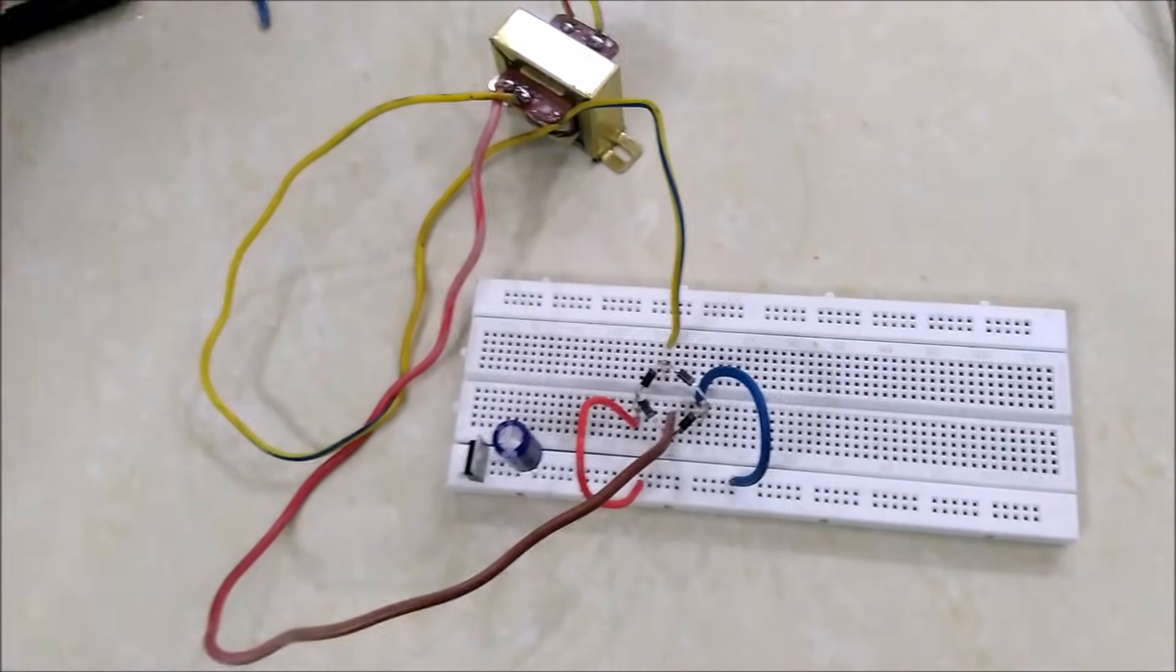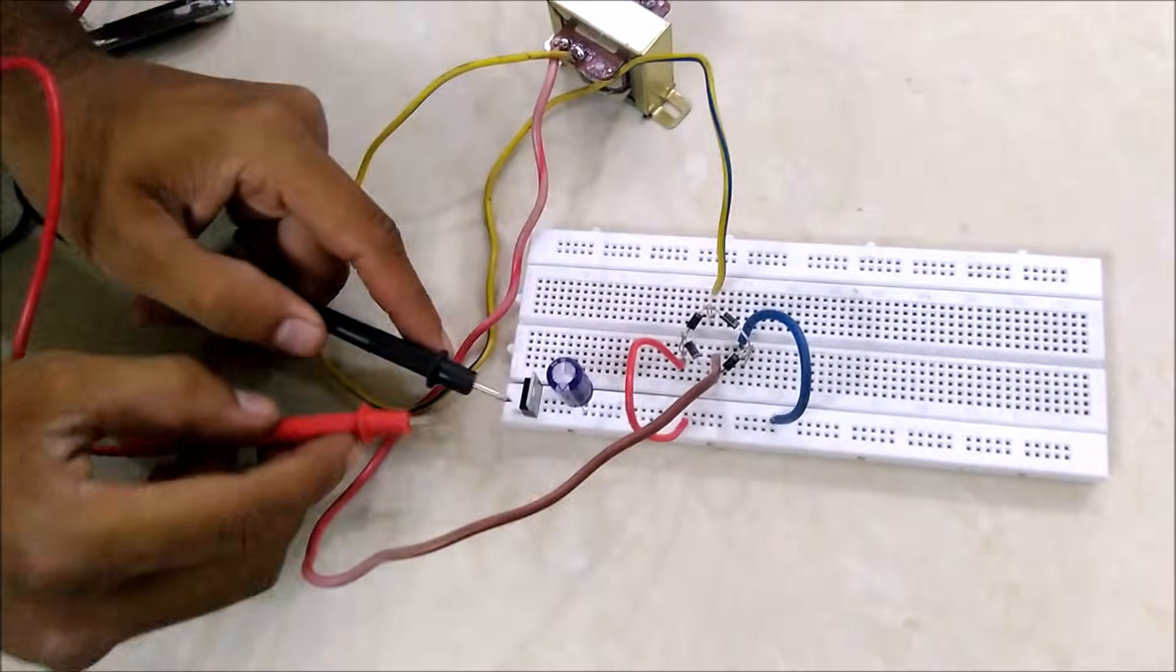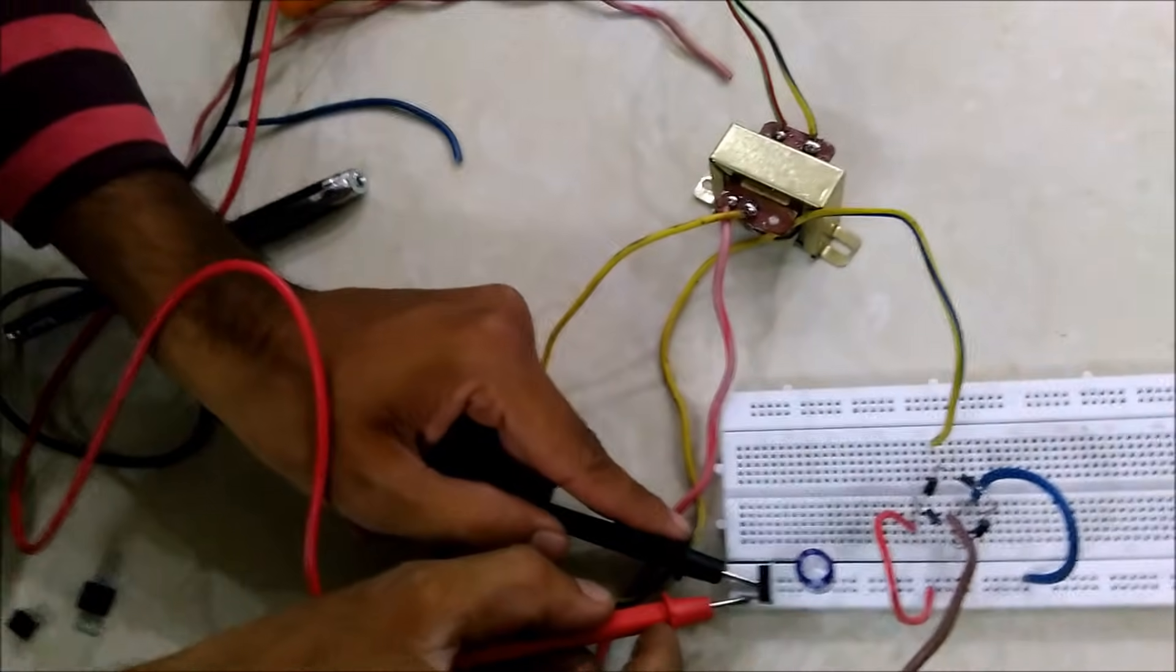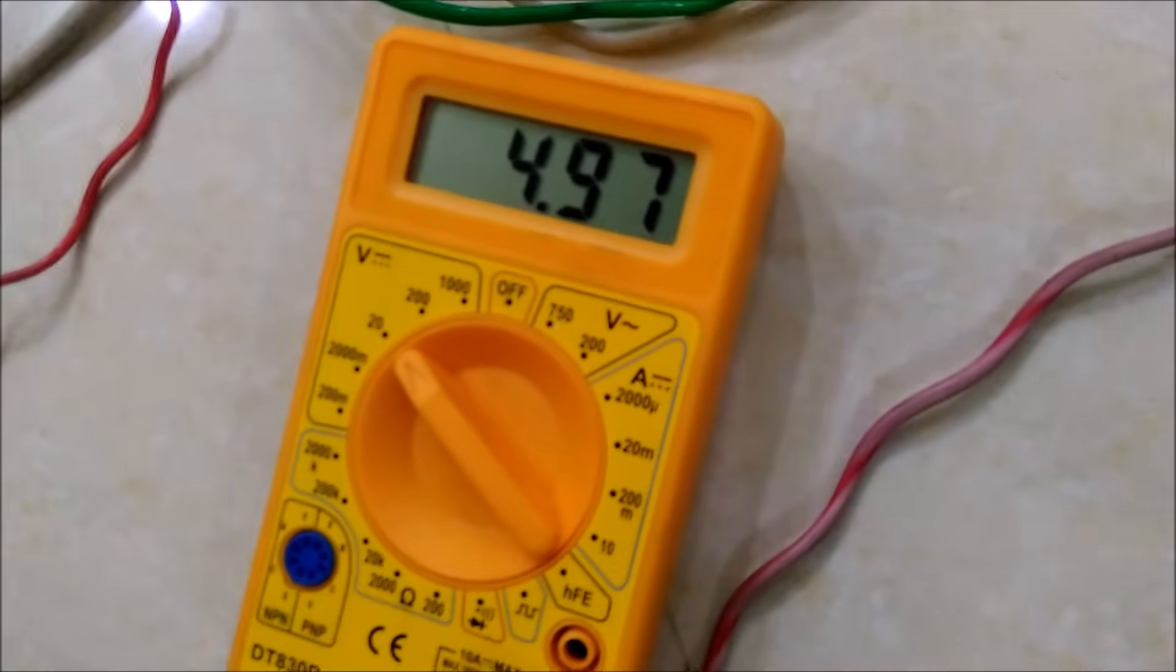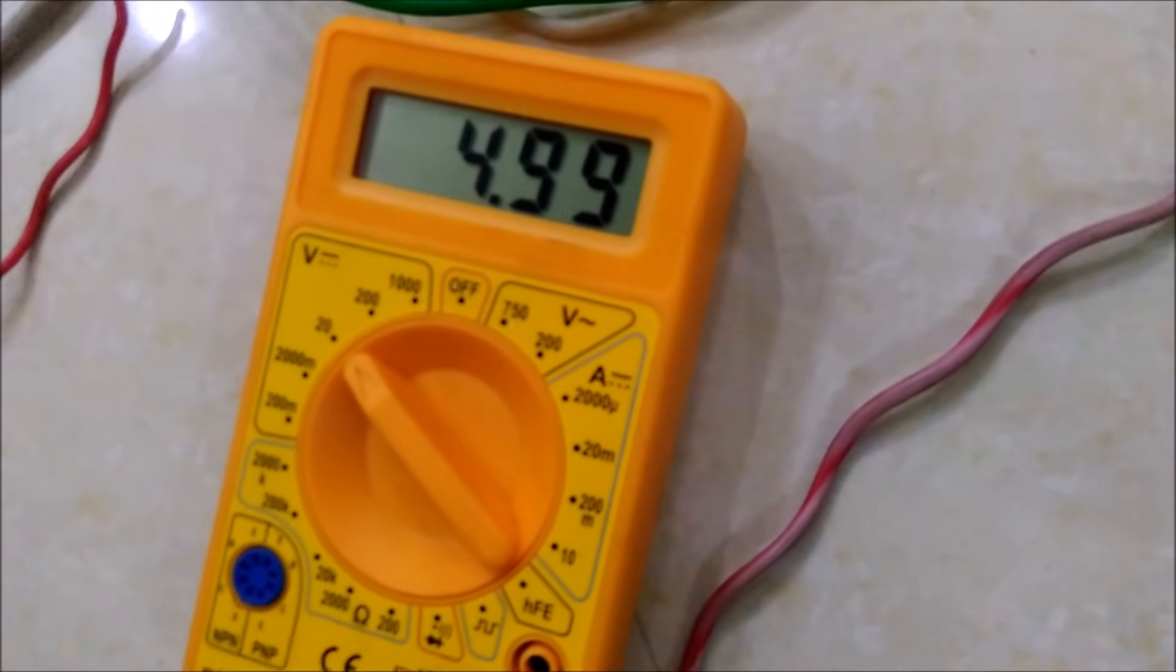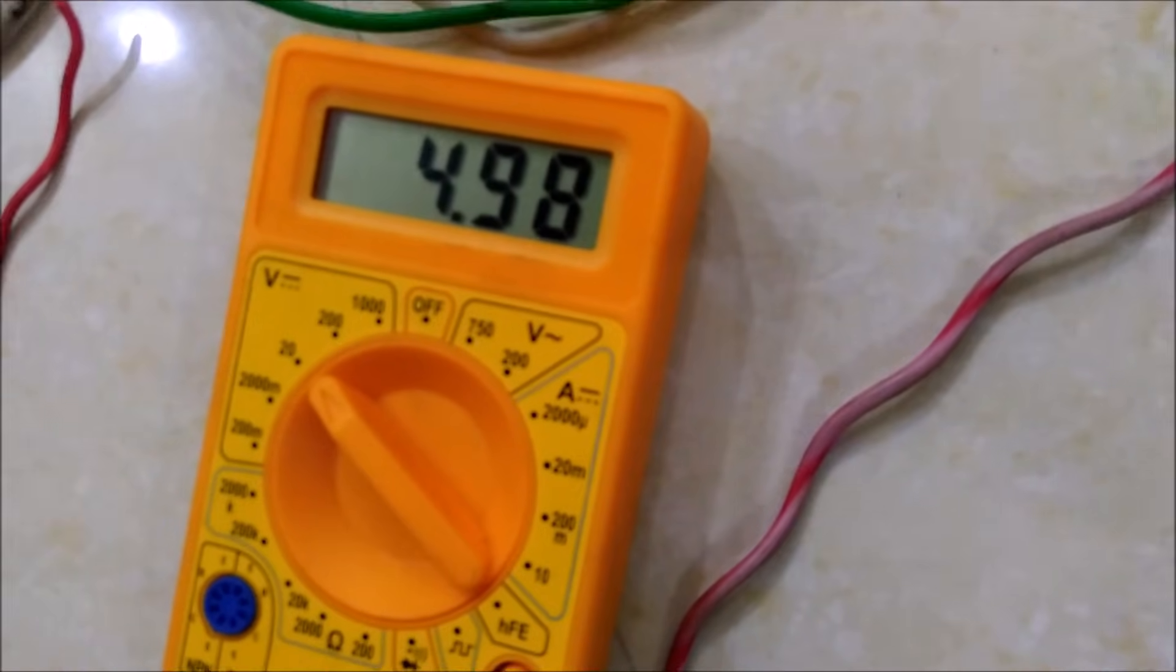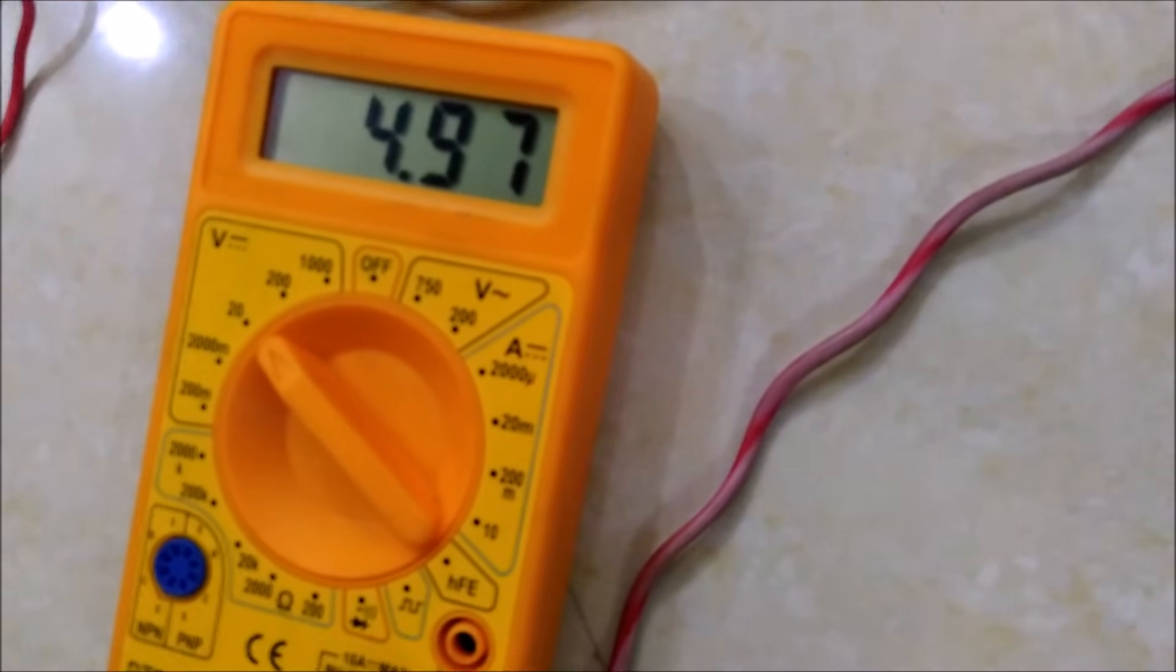We'll check the output voltage in the multimeter. This shows approximately 5 volts regulated voltage that we are getting from this circuit.